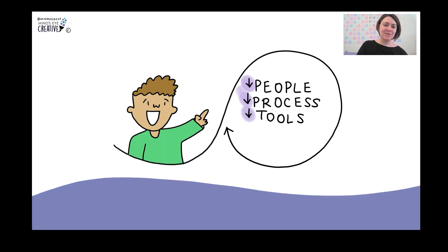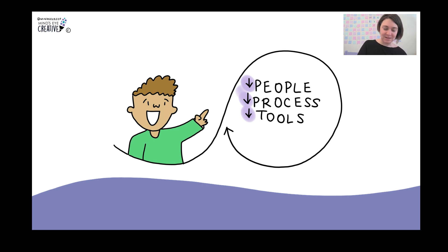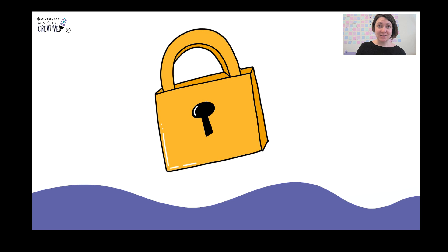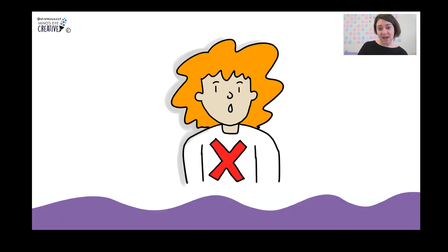One thing you seem to collectively agree on over and over is that DevOps is really about people, processes, and tools — in that order — and that we shouldn't focus on tools, which is why it's third on the list. Some controversy though around DevSecOps: if you're really doing DevOps right, then security should already be in there. So should we call it DevSecOps, or should it just be DevOps? Anyway, we need to figure that out.